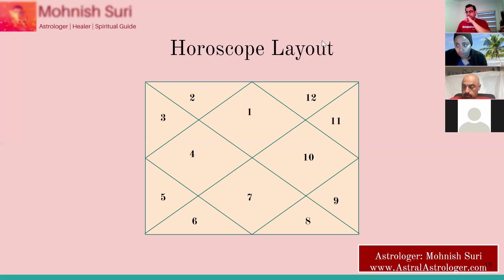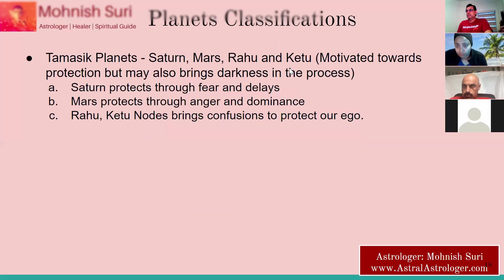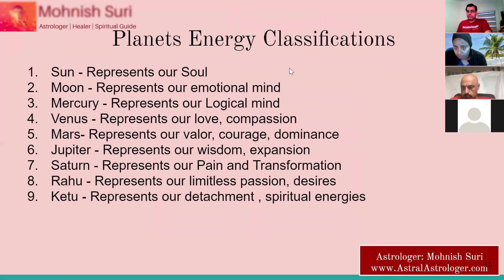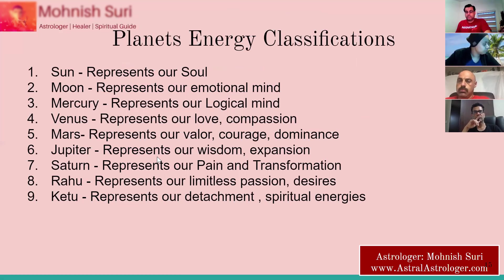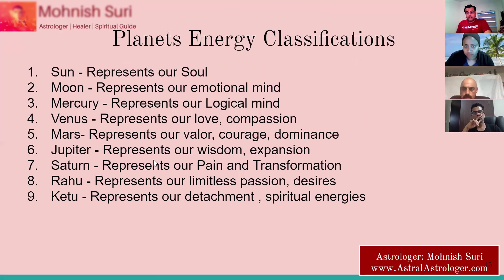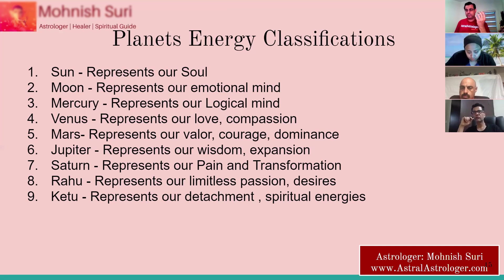Last week we covered what energies the planets represent. Sun is our soul. Jupiter represents wisdom, expansion, intelligence, seeking knowledge, and being duty-bound. Saturn is your pain and transformation. Mars is our valor and courage. Venus is our love, compassion, luxuries, desires, and lust. Mercury is your logical and analytical mind. We will take this classification of planets and put it on the horoscope to see what they represent.